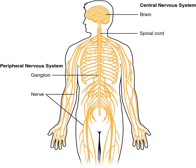The central nervous system is the part of the nervous system consisting of the brain and spinal cord. The CNS is so named because it integrates the received information and coordinates and influences the activity of all parts of the bodies of bilaterally symmetric animals — all multicellular animals except sponges and radially symmetric animals such as jellyfish — and it contains the majority of the nervous system.